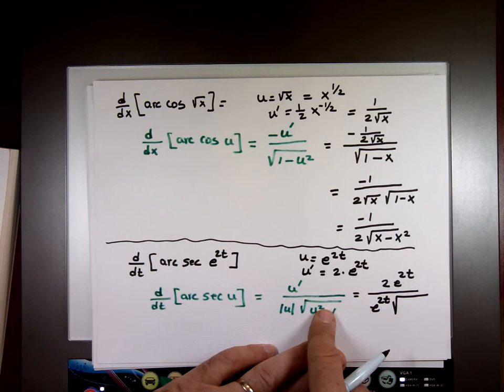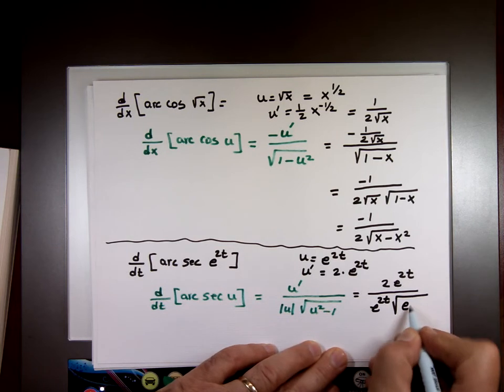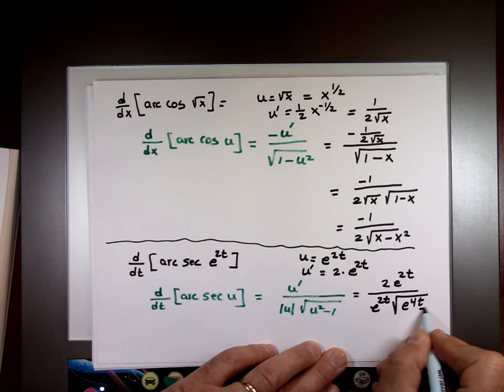e to the 2t squared, that's e to the 4t, not t squared, just 4t, minus the 1.